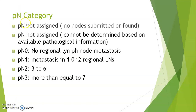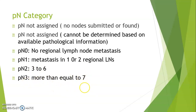For the PN category of esophagus: PN not assigned when no nodes are submitted or no lymph node is found on gross examination, or when it cannot be determined from available pathologic information. N0 is no regional lymph node metastasis. N1 is metastasis in 1 or 2 regional lymph nodes. N2 is metastasis in 3 to 6 regional lymph nodes. N3 is when more than or equal to 7 lymph nodes show metastasis.